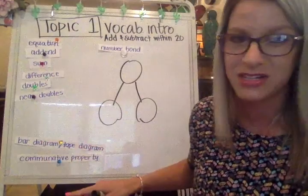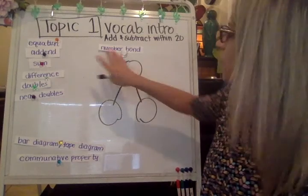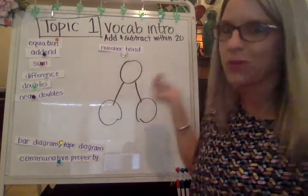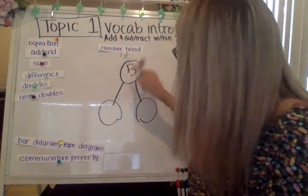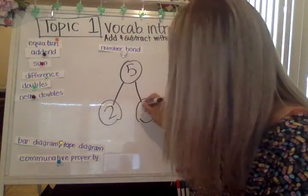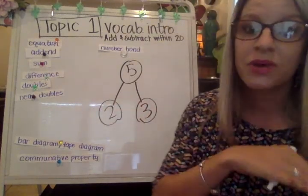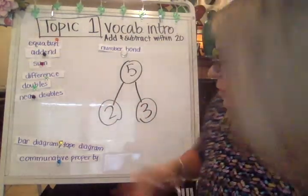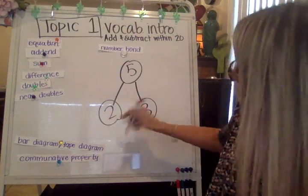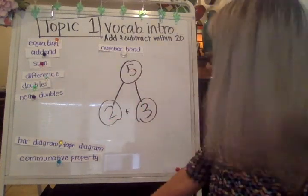So a number bond — essentially what you've learned is that the large number goes at the top. This is just like an equation. When I'm thinking about a number bond, I know that two plus three equals the five.